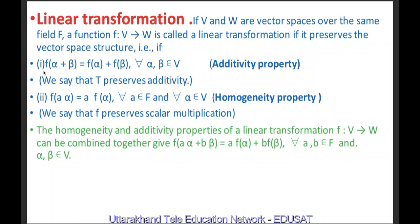The first property means it preserves vector addition and the second means it preserves scalar multiplication. We may combine these into one condition: F(Aα + Bβ) = A·F(α) + B·F(β). Hence, a function F from V to W is called a linear transformation if it preserves vector addition and scalar multiplication.